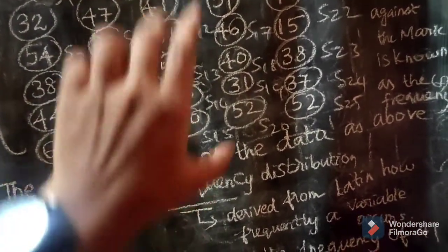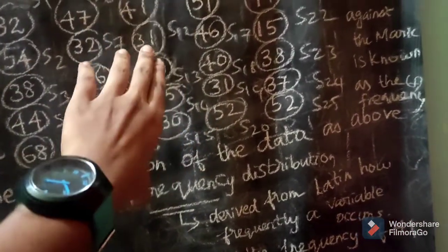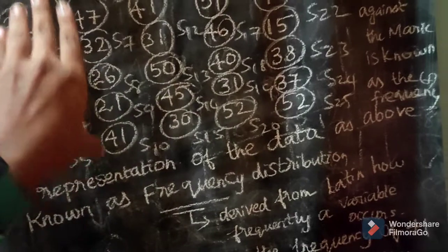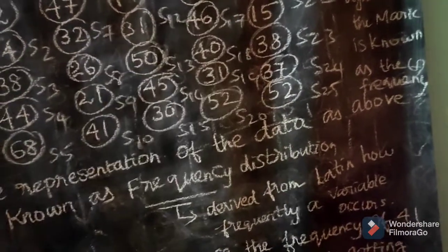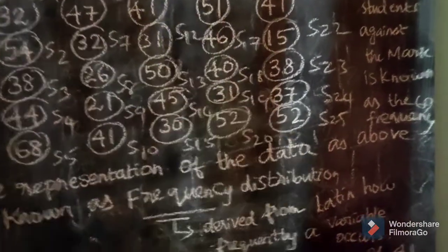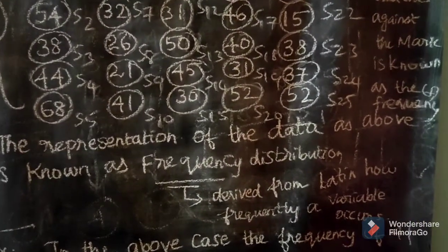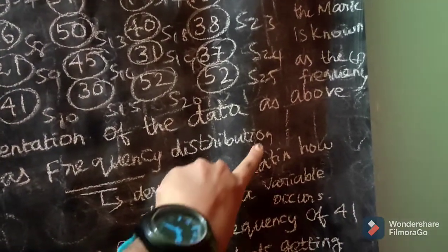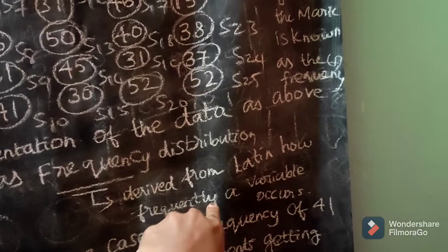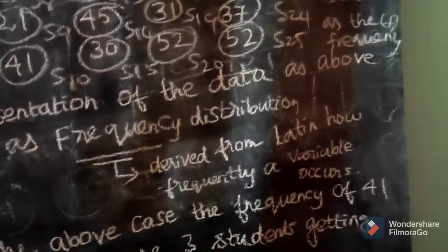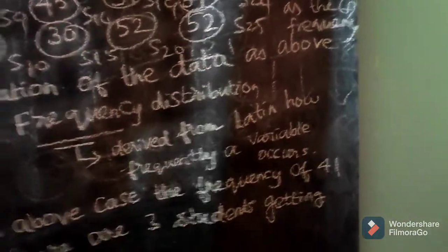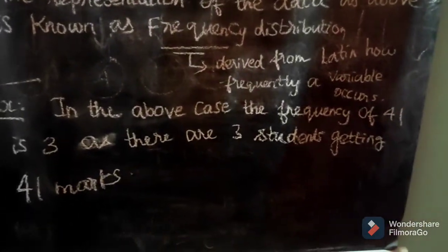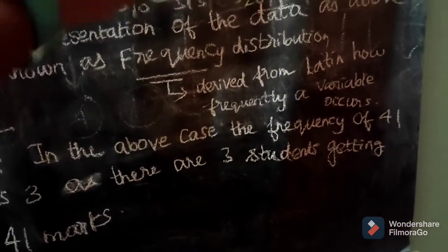In the data we have here, we call this a frequency distribution. So we distribute all 25 students — showing which marks the students got. This is what we call a frequency distribution. The word 'frequency' comes from Latin, meaning how frequently a variable occurs — how often one variable appears repeatedly.